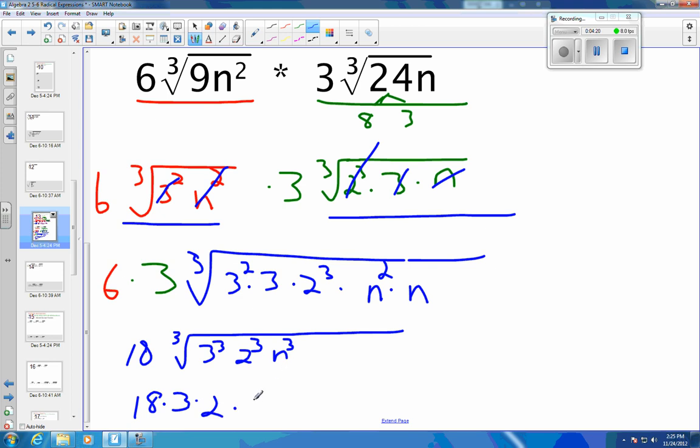And I can bring out an N. And that gets really big when you multiply 18 times 3 times 2. And 18 times 3 times 2 is actually 108. And the N just hangs along there. So it's 108N. Final answer.